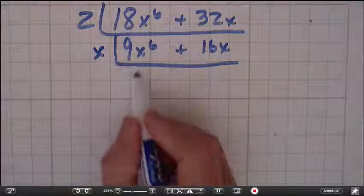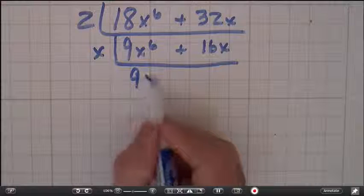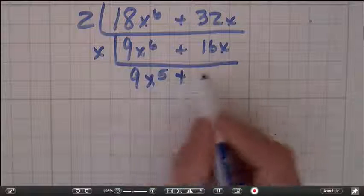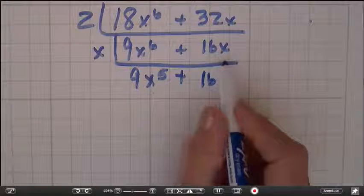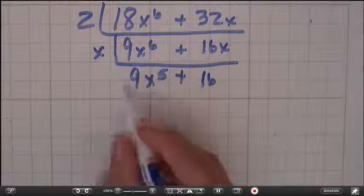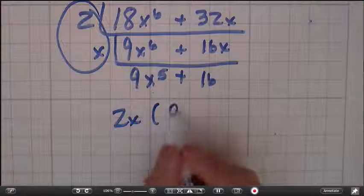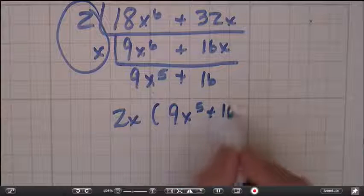So let's look at the variable x to the 6th and x. Well, I can only take out an x. Remember, bring that 9 down with that x. Only now it's x to the 5th because I've taken one out. Bring that 16 down. That x goes away because it's x divided by x. And so I multiply these two together and I get 2x times 9x to the 5th plus 16.